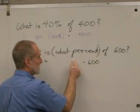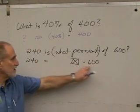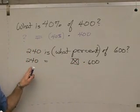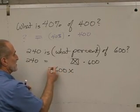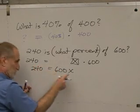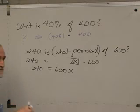So if we let that unknown be a box or X or whatever you want to let it be, we've got 600 times this thing equals something else. But we don't want to know what 600 times that thing is. We want to know what just one of those things is. So how do we get rid of that 600? Divide both sides by 600.